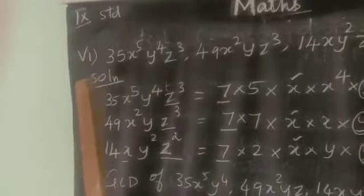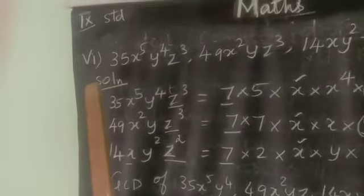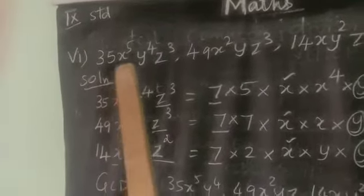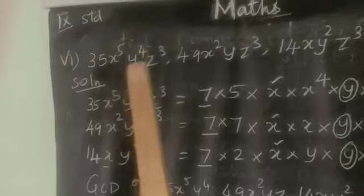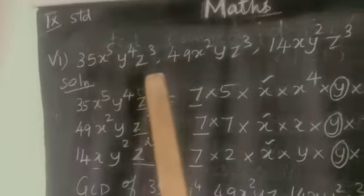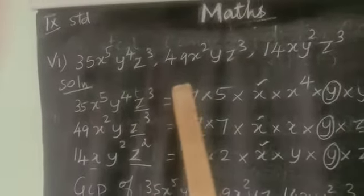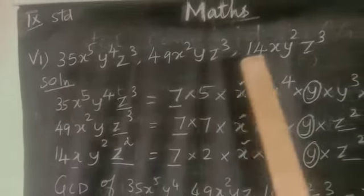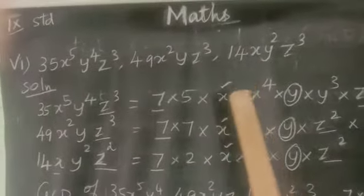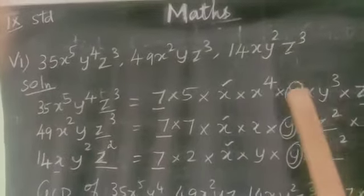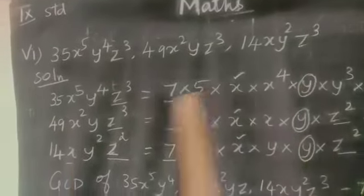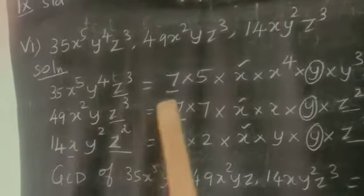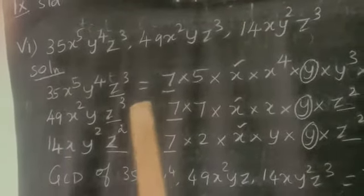Now we see the sixth problem: finding the GCD of 35x⁵y⁴z³, 49x²yz³, and 14xy²z³. Firstly we find out the separate linear factors.